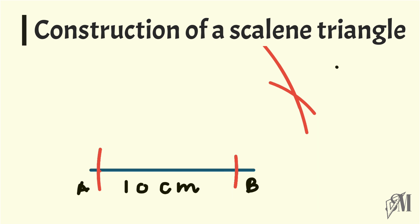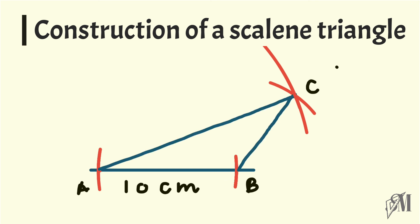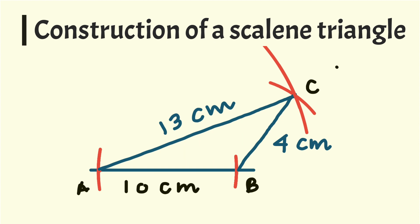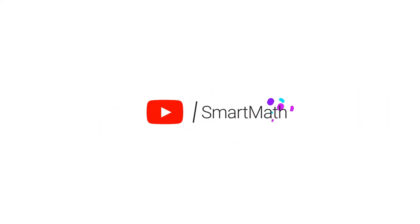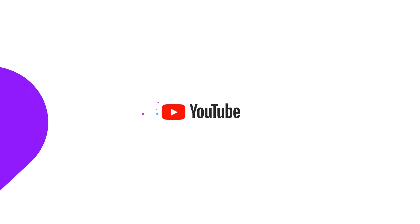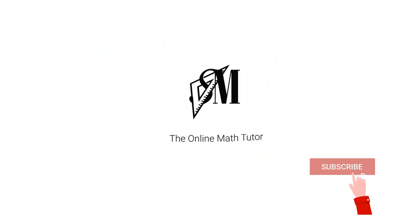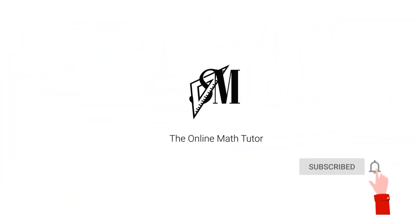Take 13 centimeters with your compass, bring it to A, and draw an arc. The point of intersection of the two arcs is point C. Join AC and BC and write down the lengths as 13 centimeters and 4 centimeters. This is how you construct a scalene triangle. I hope you understood how to construct triangles and a hexagon. See you with another Smart Math tip — until then, goodbye.